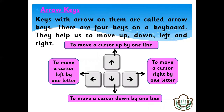Arrow keys — keys with arrows on them are called arrow keys. There are four arrow keys on a keyboard. They help us to move up, down, left, and right. This means we can move the cursor in any direction — up, down, left, right. For example, if the cursor is on one line, you can use the up arrow to move it to the previous line, and the left or right arrow to move within a line.